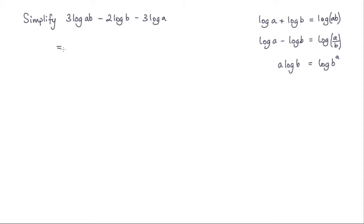Let's go ahead and make a start. The first thing I'm going to do is leave this first part of the expression, so 3 log ab minus, and I'm going to factor out this negative here to give me 2 log b plus 3 log a.